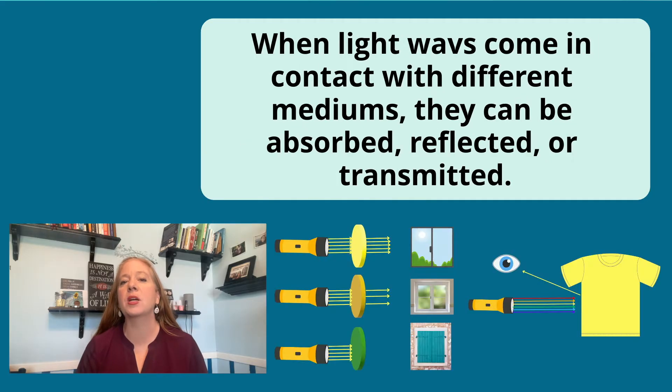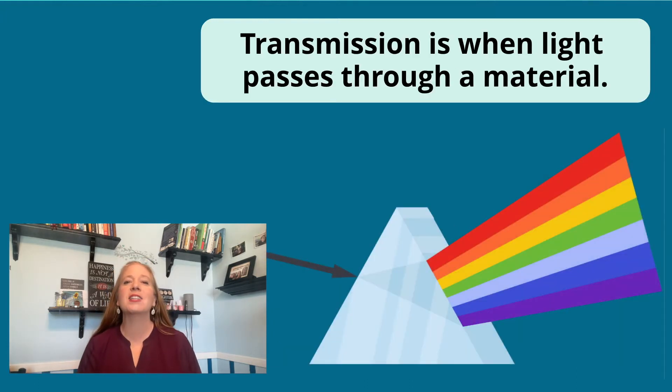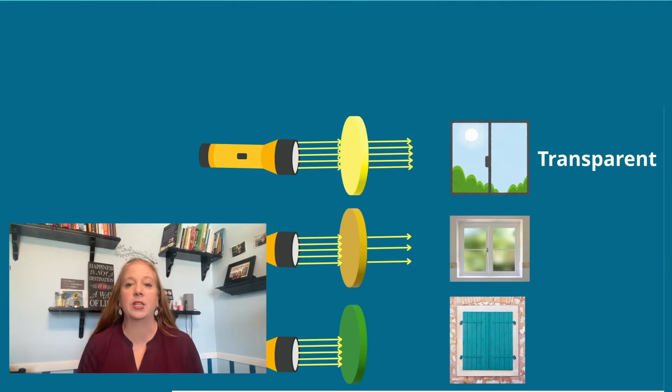When light waves come in contact with different mediums they can be absorbed, reflected, or transmitted. Transmission is when light passes through a material. Objects that are transparent, like clear glass, allow light to pass through it clearly.